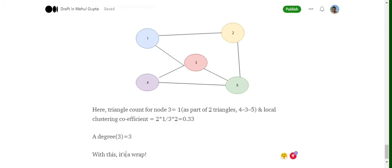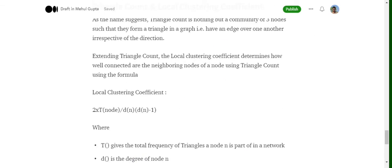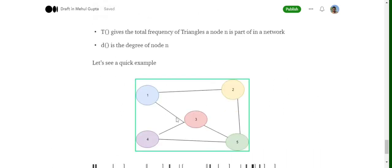Now discussing what is local clustering coefficient. It goes with a simple formula. The formula goes something like this: two into the triangular count of the node upon degree of the node into degree of the node minus one. So what is the triangular count of the node? It is the number of triangles a particular node is part of, and local clustering coefficient is calculated for each node separately.